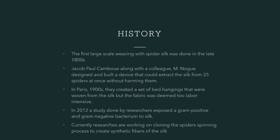History: The first large-scale weaving with spider silk was done in the late 1800s. Jacob Paul Kambu, along with a colleague M. Newegg, designed and built a device that could extract silk from 25 spiders at once without harming them. In Paris in the 1900s, they created a set of bed hangings woven from the silk, but the fabric was deemed too labor-intensive. In 2012, a study done by researchers exposed a gram-positive and gram-negative bacterium to silk. Currently, researchers are working on cloning the spider's spinning process to create synthetic fibers for the silk.